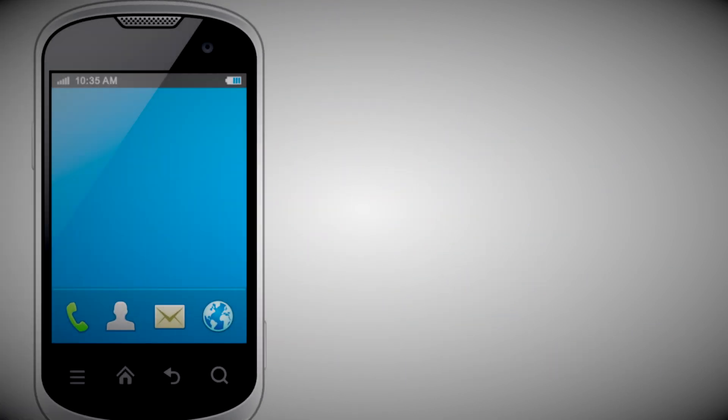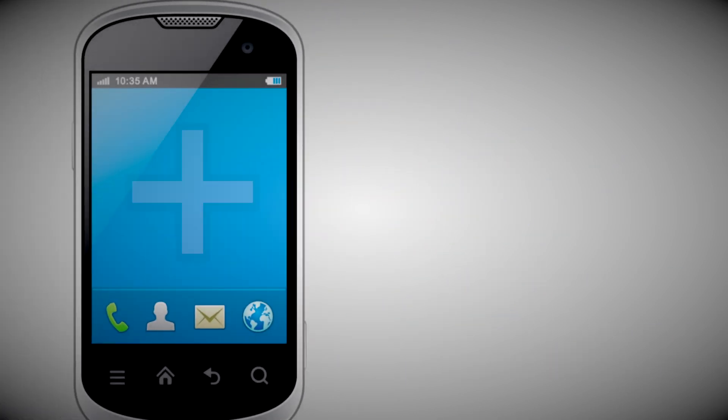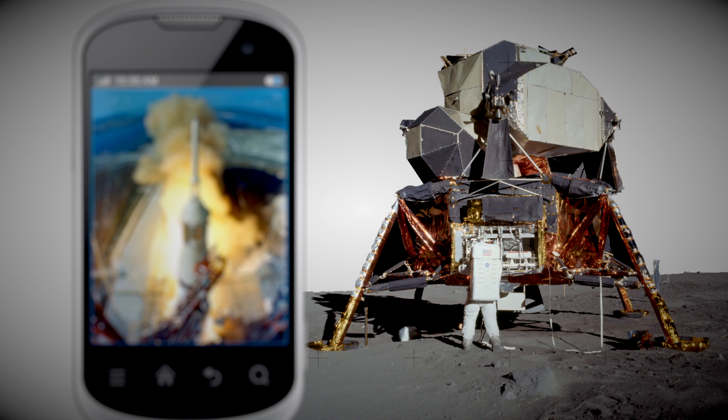Since then, computers have changed our lives completely. For instance, a basic cell phone today has more processing power and costs much less than the Apollo Guidance Computer, which was used in the Apollo 11 moon mission in 1969.